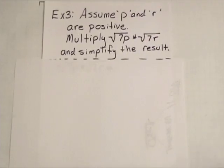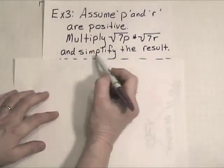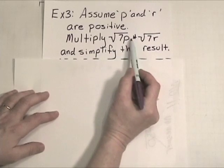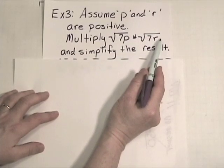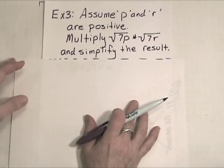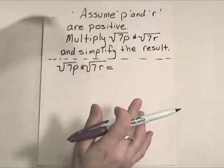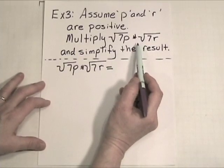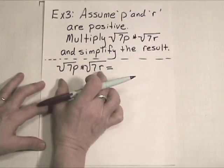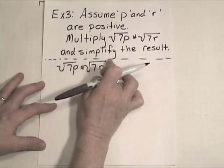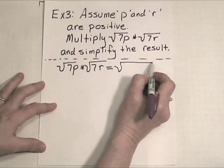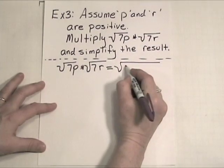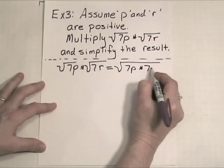Let's take a look at another example. This time, we want to assume that P and R are positive, and you're being asked to multiply the square root of 7P times the square root of 7R, and to simplify the result. Well, we know that when we're taking two square roots and we're multiplying them together, I can actually condense these together and put it underneath one big square root. So, let's go ahead and do that.